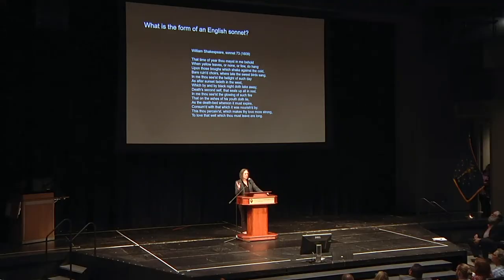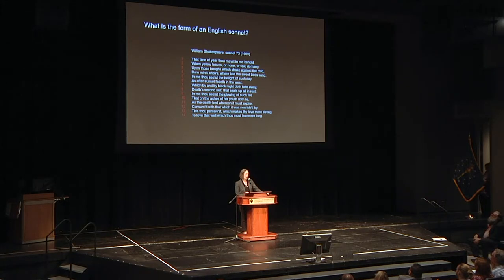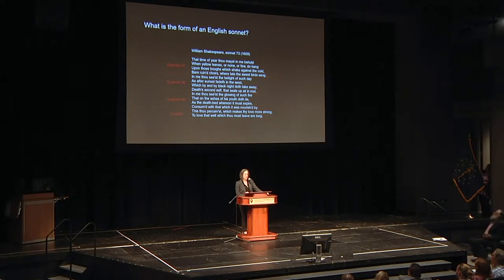Usually what we mean by form — here's an example from my introduction to poetry class — is the set of rules that govern the setup of a literary work. Here's Shakespeare's Sonnet 73: it has 14 lines following a particular rhyme scheme that divides the poem into three quatrains and a concluding couplet, with Shakespeare punctuating to draw attention to that structure. It's also written in iambic pentameter, the usual meter for the English sonnet. That's the form of a sonnet.